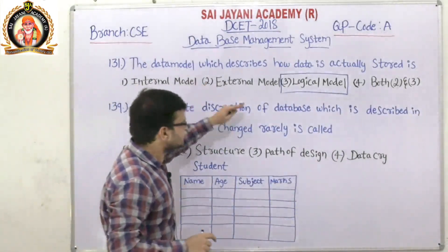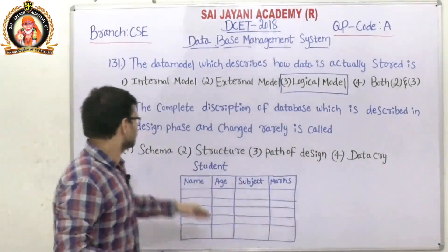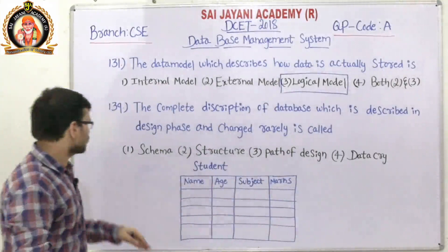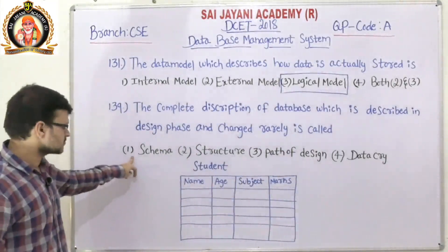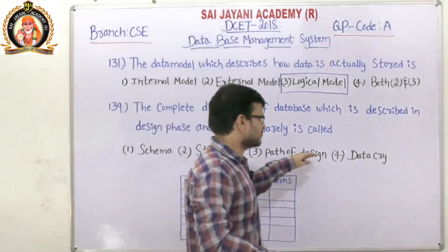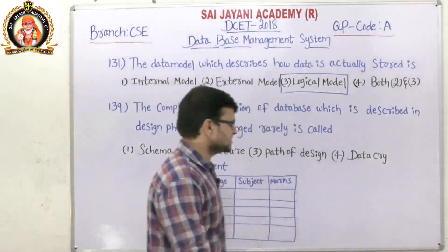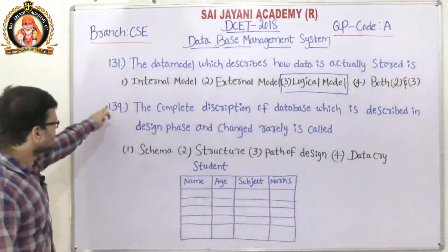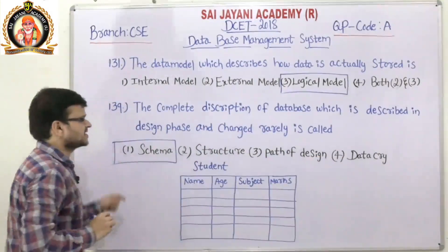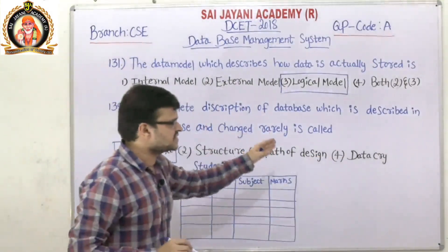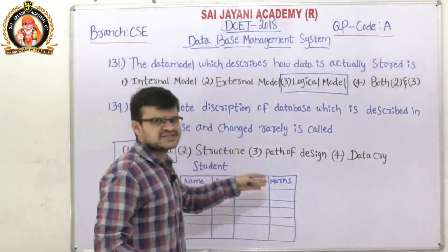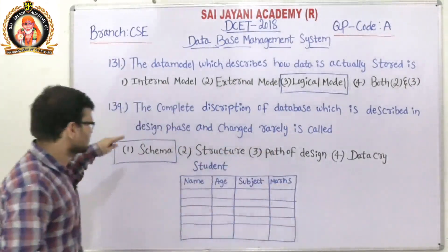Question number 139: The complete description of the database which is described in a design phase and changed rarely is called — options are schema, structure, path of design, and data dictionary. For question 139, the first option, schema, is the right answer. The complete description of the database described in a design phase but changed rarely is called schema.